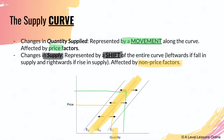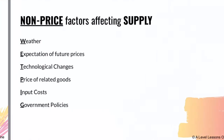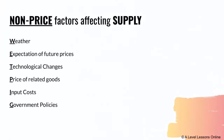Moving on — what are the non-price factors affecting supply? An easy acronym to remember is WET PIG: Weather, Expectation of future prices, Technological changes, Price of related goods, Input costs, and Government policies.